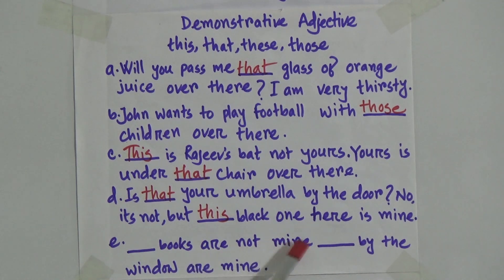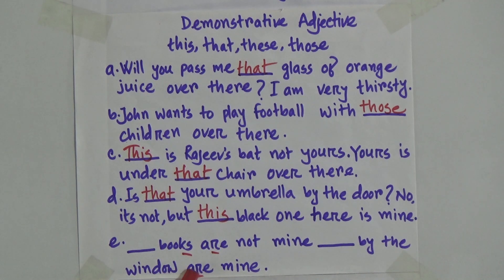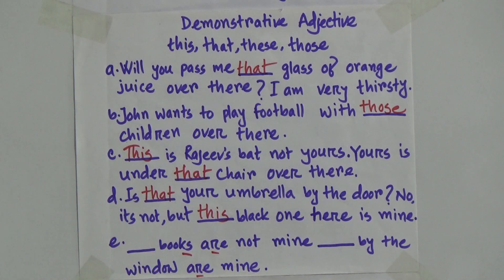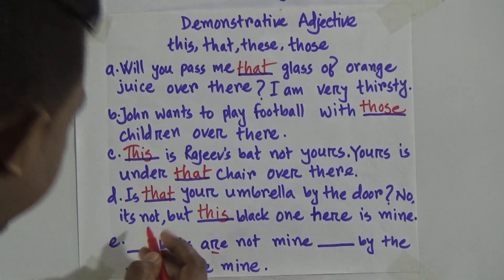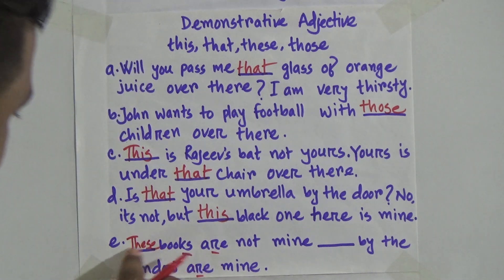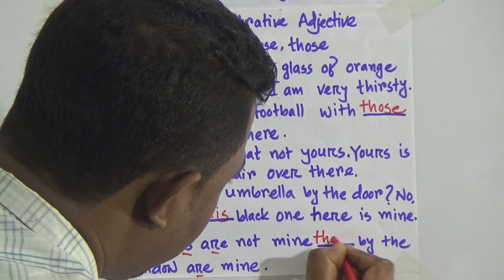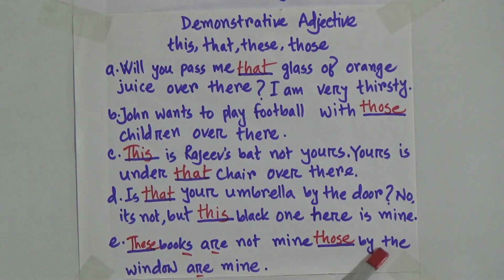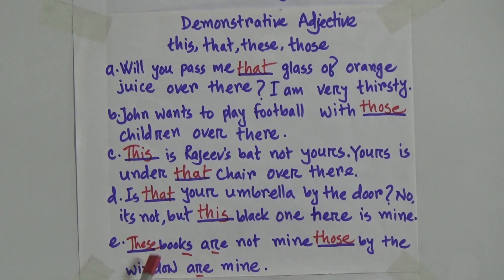Number E: gap books are not mine. Dear students, mark books — it's plural. By the window are mine — here also plural. So we will have to use plural demonstrative adjective. These books are not mine. Those by the window are mine — this window is not nearby you. So the answer is: these books are not mine, and those by the window are mine.